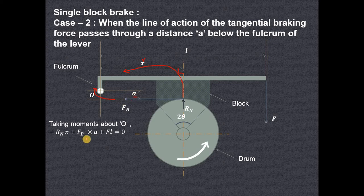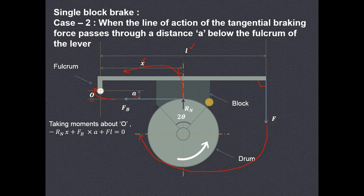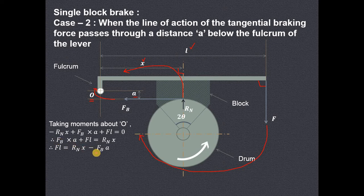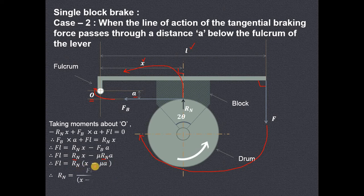FB and perpendicular distance is A, so it is clockwise moment FB times A. Similarly, this F will also produce a clockwise moment about fulcrum O, and perpendicular distance is L, so F times L is the clockwise moment produced by the applied force F which presses the block against the rotating drum rotating anticlockwise. Transferring terms, and substituting FB equals mu times Rn, taking Rn common gives Rn times (X minus mu·A). So normal reaction Rn equals FL divided by (X minus mu·A).